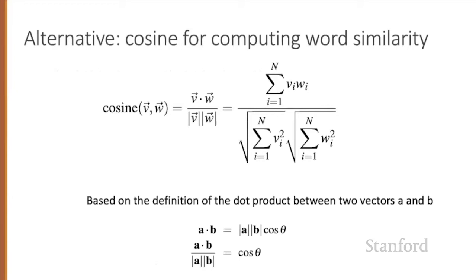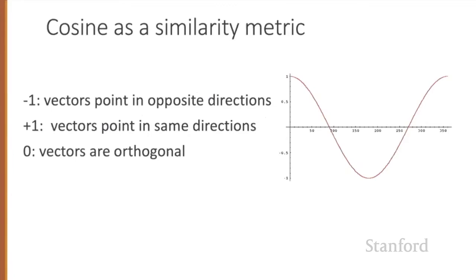So we modify the dot product to normalize for the vector length by dividing the dot product by the lengths of each of the two vectors. This normalized dot product turns out to be the same as the cosine of the angle between the two vectors, based on the geometric definition of the dot product as the product of the Euclidean magnitudes of the two vectors and the cosine of the angle between them. The cosine value ranges from one for vectors pointing in the same direction to minus one for vectors pointing in opposite directions, but since raw frequency values are non-negative, the cosine for these values ranges from zero to one.